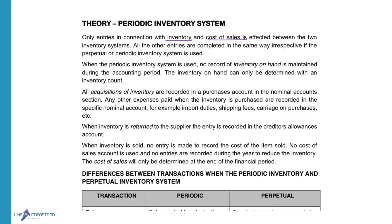In the perpetual inventory system, you record the movement of inventory during the year. In the periodic inventory system, you don't write in your inventory account during the financial year. In the perpetual system, you record cost of sales every time goods are sold or returned. In the periodic inventory system, you don't have a cost of sales account.